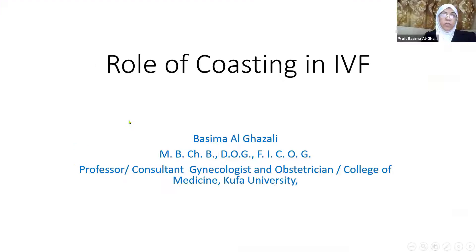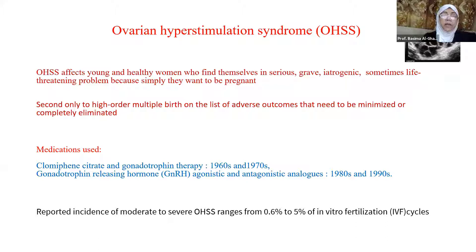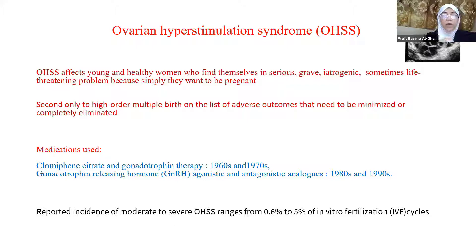To start with, I think we should talk shortly about ovarian hyperstimulation syndrome. As you all know, ovarian hyperstimulation syndrome affects young and healthy women who find themselves in a serious grave iatrogenic, and sometimes life-threatening problem. As Professor Rahim Haloub said, it may affect the life of the mother — and this is simply because they want to be pregnant and have a baby. It is iatrogenic, secondary to medication.